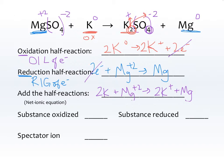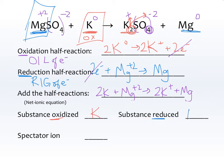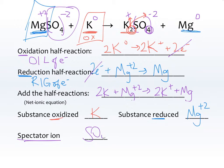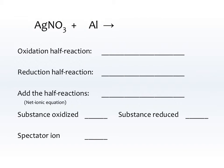The substance that is oxidized is K (or K⁰). The substance that is reduced is Mg²⁺ — do not forget the plus two. Your spectator ion — the thing not really participating — is the sulfate, SO₄²⁻. Again, don't forget the charge.